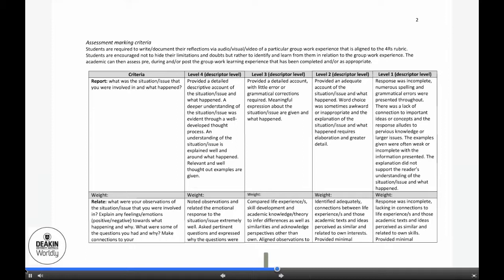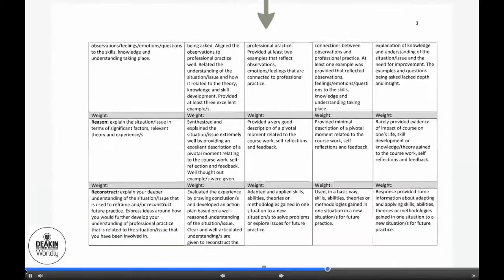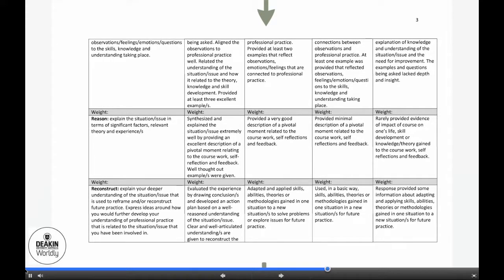The descriptor levels start at high distinction in level four and work down. As you can see, the wording changes between each of the different levels, and you're free to adapt and use what you need. This is a continuation of the first part of the rubric, which goes on to Reason and Reconstruction. Again, the weight is something you will need to determine yourself, and you might want to change the wording depending on how you want to weigh the levels for each assessment task.